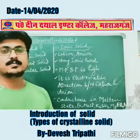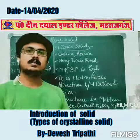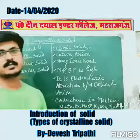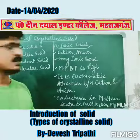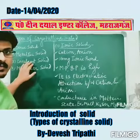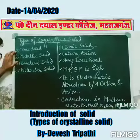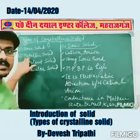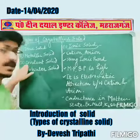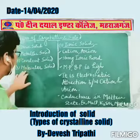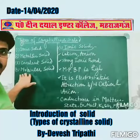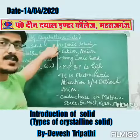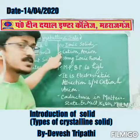On the basis of binding energy of solids, we classify crystalline solids into four types. First is ionic solid, second is metallic solid, third is covalent solid, and fourth is molecular solid.